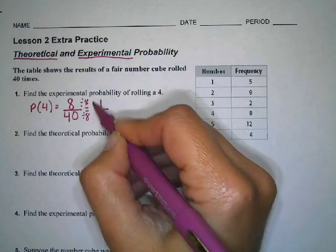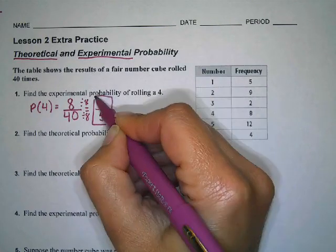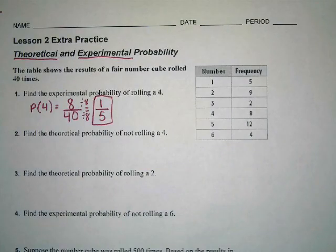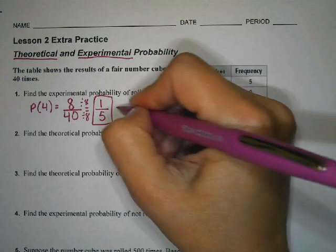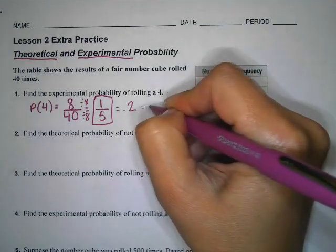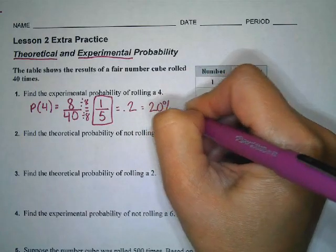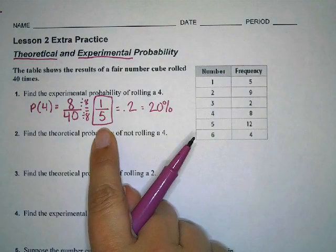So the probability would be 1 out of 5. You could change that to a percent by dividing. One divided by 5 gives us 0.2, which is the same thing as 20%. But really I'm looking for the answer 1 out of 5.